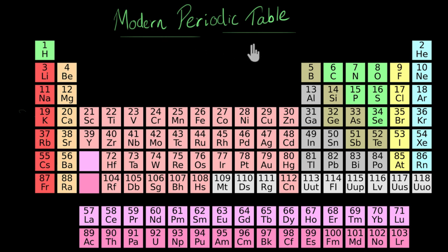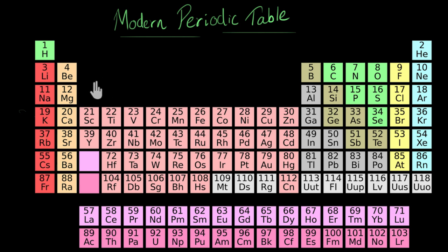The modern periodic table — you would have seen this somewhere in your textbook. This is a table where we arrange elements in the increasing order of their atomic numbers: 1, 2, 3, 4, 5, 6, 10, and so on. We also group the elements based on their similar chemical properties.